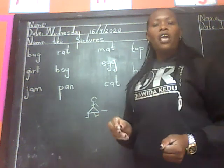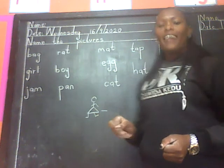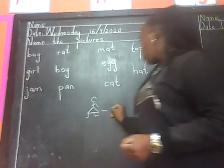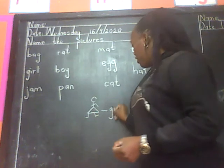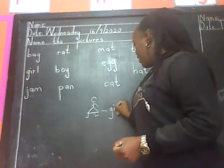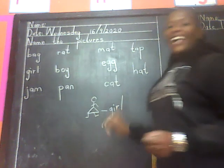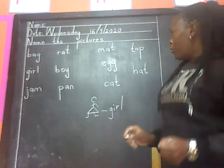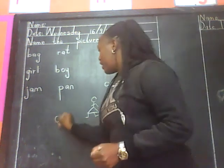This is a picture of a girl, a picture of a girl. And how do we write the word girl? We are going to write the name there. G, i, r, l — girl. Good.